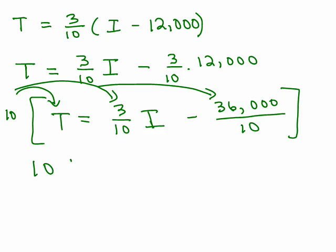So if I multiply both sides by 10, remember you have to multiply it to every term. So I have 10T equals, now when I do 10 times 3 tenths I, that'll give me 3I because the tens will cancel, which is the whole idea of multiplying by the least common denominator. And 10 times the last term over here, the tens will cancel and I have 36,000. By the way, if I had just written this as 3,600 and then multiplied by 10, I would get back to 36,000.